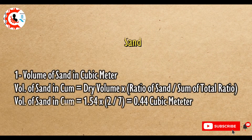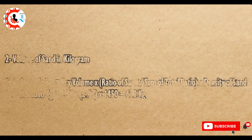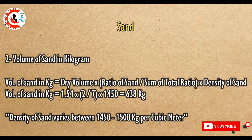Sand. Volume of sand in cubic meter equals dry volume multiplied by ratio of sand divided by sum of total ratio. 1.54 × (2/7) equals 0.44 cubic meter. Volume of sand in kilogram equals dry volume multiplied by ratio of sand divided by sum of total ratio, multiplied by density of sand. 1.54 × (2/7) × 1450 equals 638 kg.